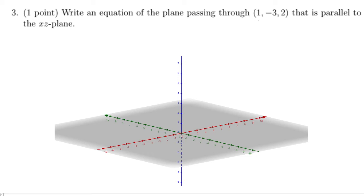You want to write an equation of the plane passing through 1, negative 3, 2, that is parallel to the xz plane.